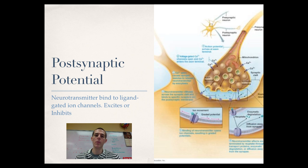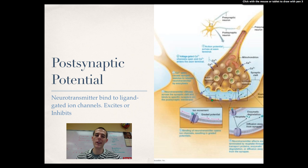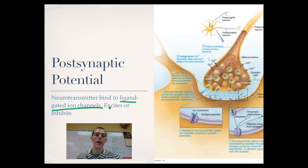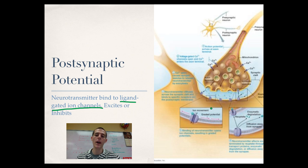When they bind to the post-synaptic membrane, you get either an excitatory response or an inhibitory response. Those neurotransmitters, when they bind, cause a bunch of ligand-gated ion channels to open or close. A ligand is something that binds specifically to a specific receptor, so a ligand-gated ion channel is a protein channel that lets ions through, gated in response to a ligand binding it. When the specific ligand — in this case the neurotransmitter diffusing across the cleft — binds to the channel, it signals the gate to open up.